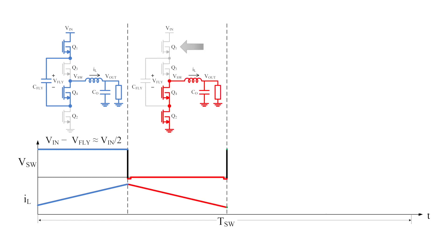During the second stage, Q1 is turned off and Q2 is turned on, bringing the switch node to ground. This leaves the CFLY capacitor disconnected and de-energizes the inductor.